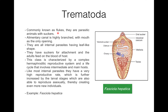The body is unsegmented, dorsoventrally flattened, and leaf-like. The tegument is thick but without cilia. Rhabdites are also present in Trematoda. They are all internal parasites with a leaf-like shape. Trematoda have suckers used for attachment, and the adults feed on the blood of the host. Sometimes hooks are also present. This class has a characteristic complex hermaphroditic reproductive system.